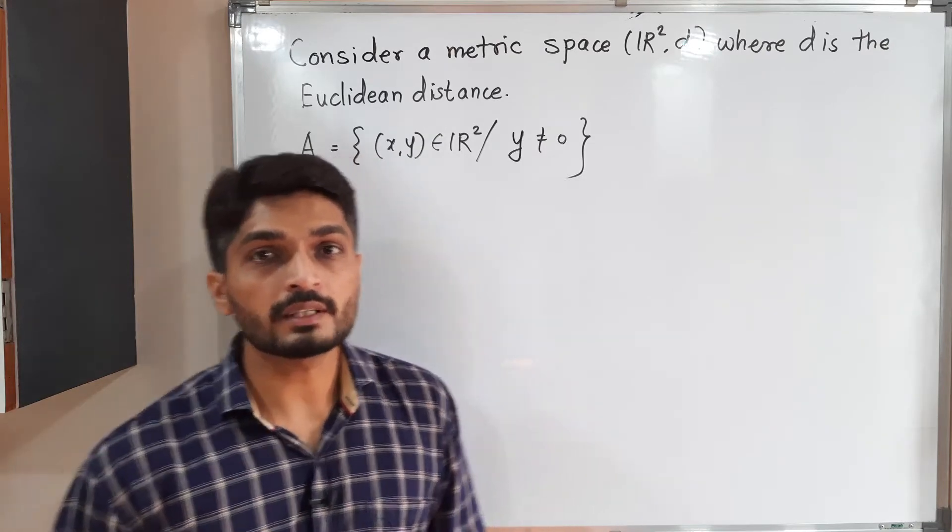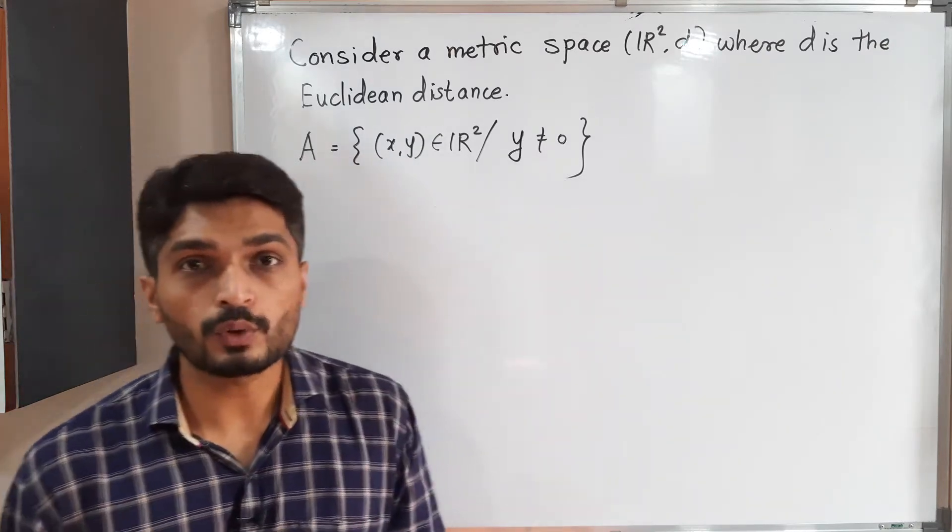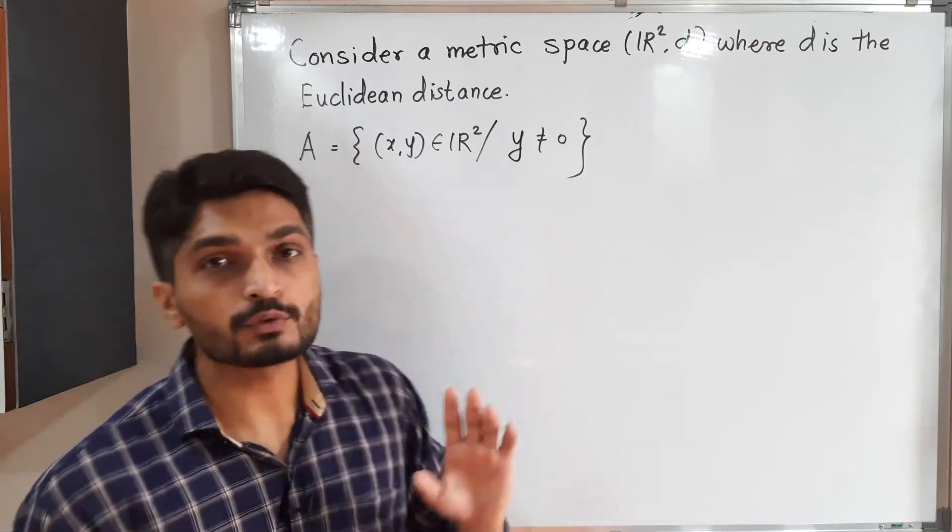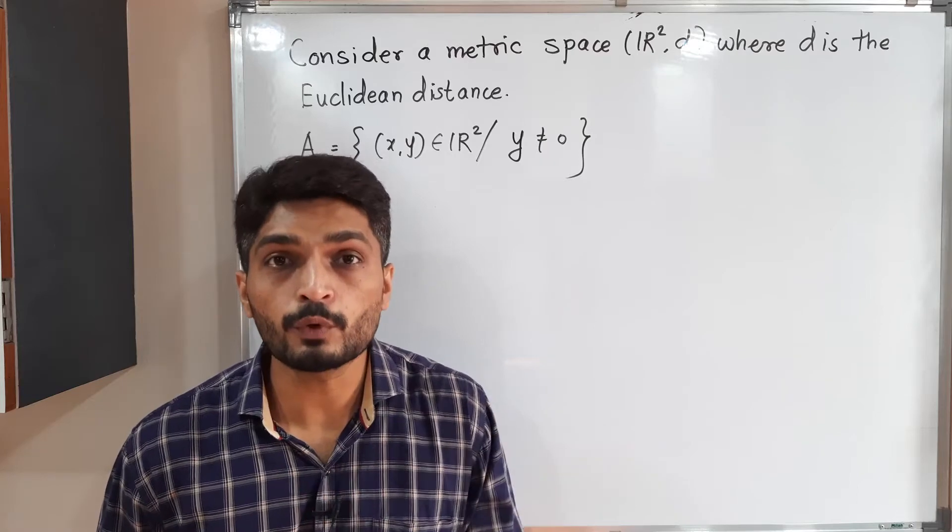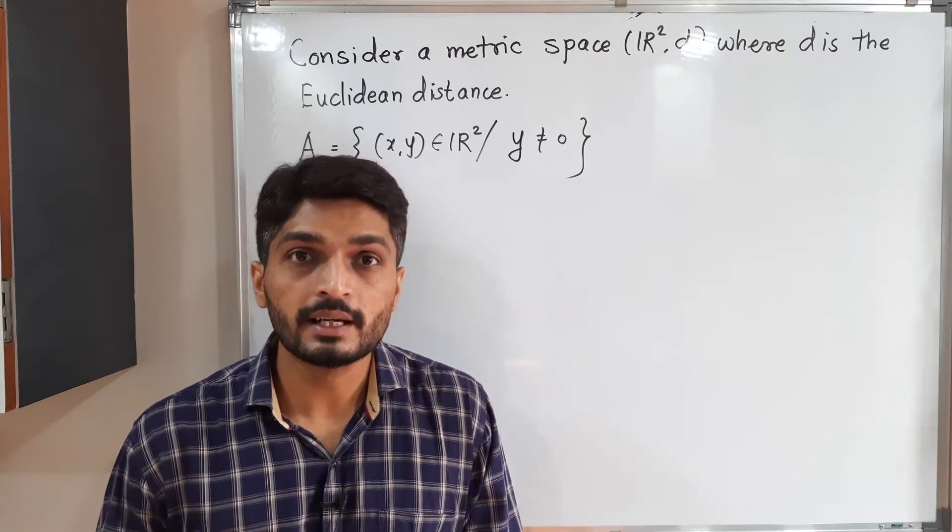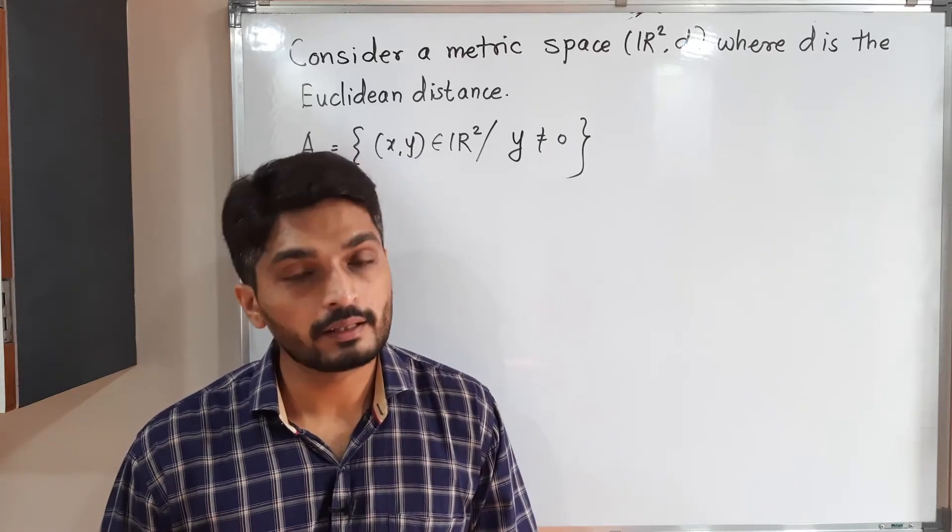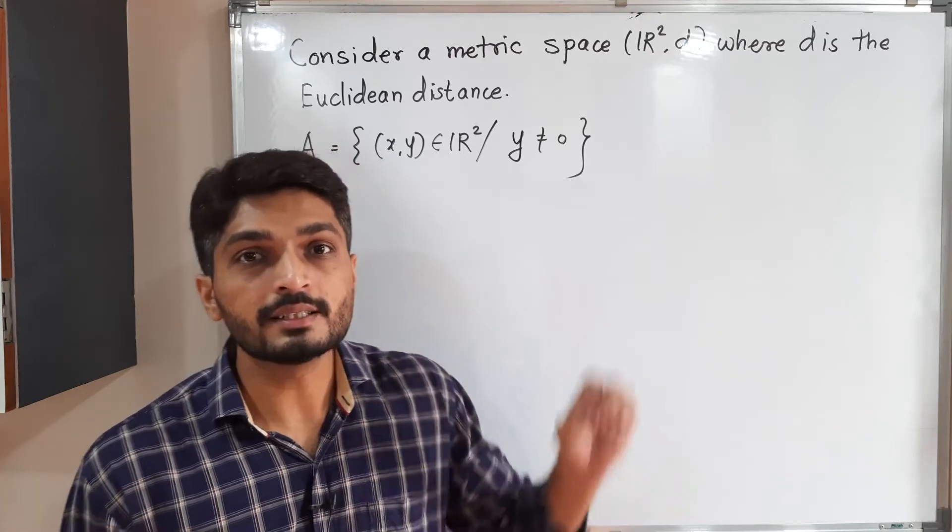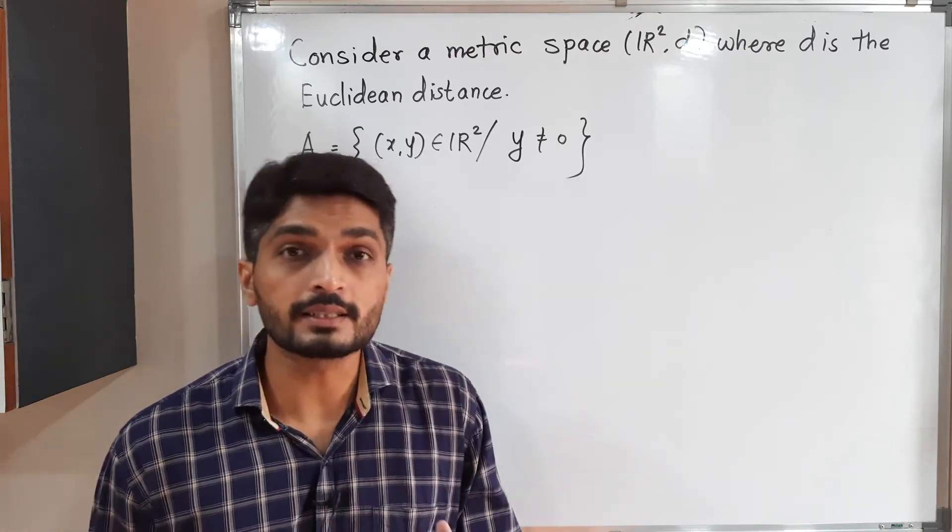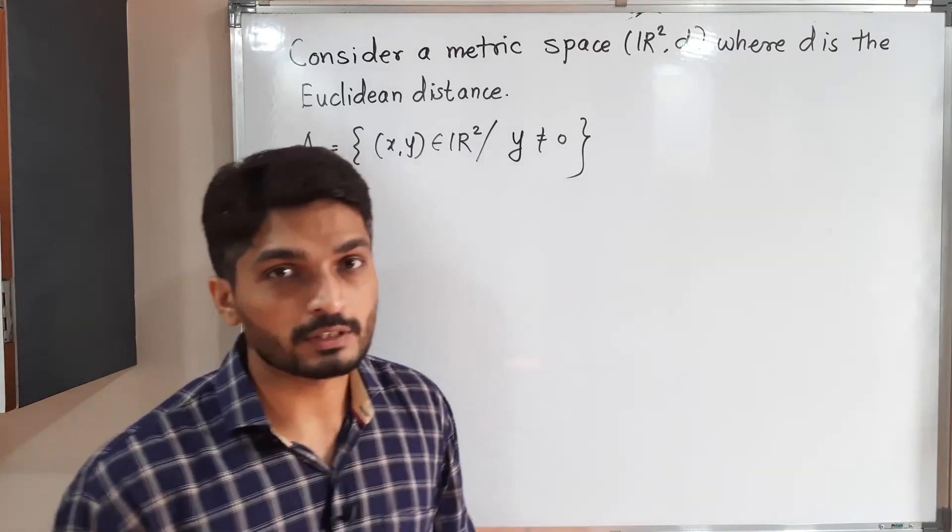They have given a set A, which is defined as {(x,y) ∈ R² : y ≠ 0}. That means whose y coordinate is not equal to 0. We have to check whether this set is connected or disconnected. I will try to express this set in a better way so we can easily decide.